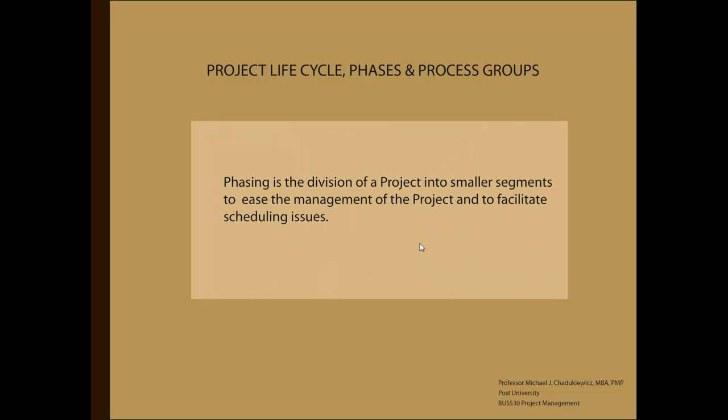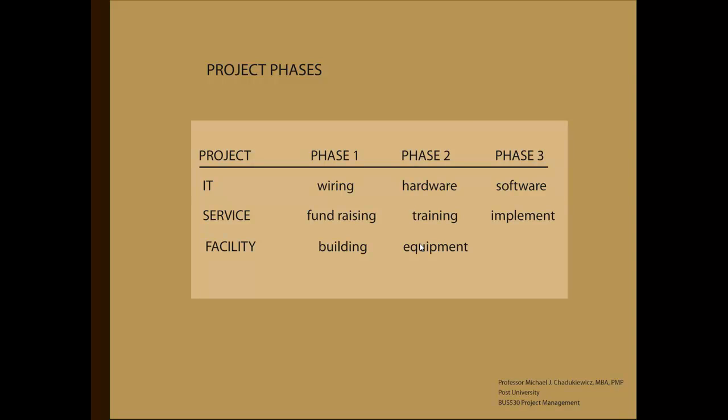The stages of a project's lifecycle should not be confused with the phases of a project. Phasing is the division of a project into smaller segments to ease the management of the project or to facilitate scheduling issues. Here are a few examples that may clarify this point. IT projects are often divided into three phases: wiring, hardware, and software.